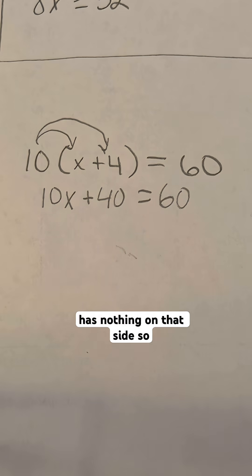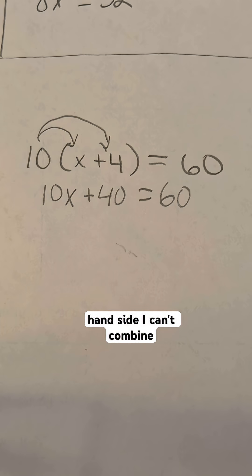60 has nothing on that side, so I can't combine that with anything. The left-hand side, I can't combine together either because there's x's and there's constants. So those two things cannot be added together to get 50. So you have x's and you just have the number 40, and that's all you can do. That is an equivalent equation.